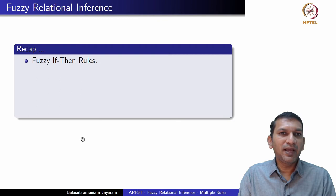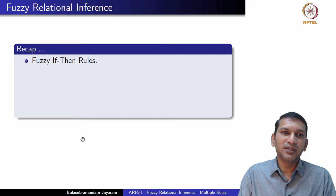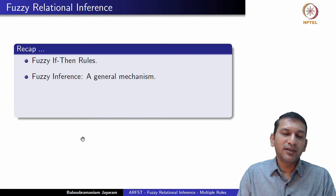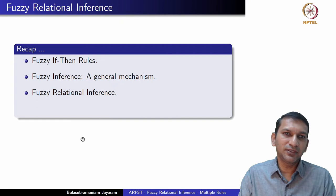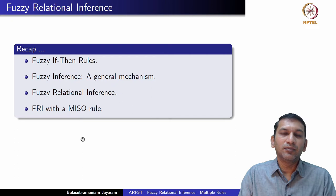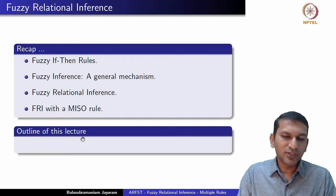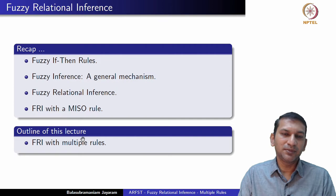We have already seen the impact of one particular type of classification — whether a fuzzy if-then rule is a single input single output rule, or a multi-input single output rule — on the fuzzy relational inference scheme itself. Then we moved on to looking at fuzzy inference schemes in general, and we have been discussing one particular type: fuzzy relational inference. In the last lecture, we handled multi-input single output rules. In this lecture, we will look at fuzzy relational inference when we have multiple rules — a knowledge base consisting of many fuzzy if-then rules.